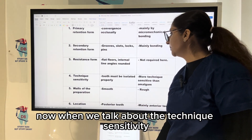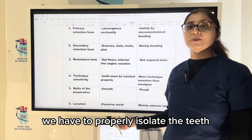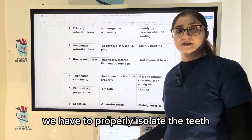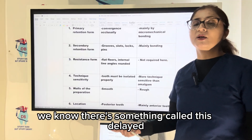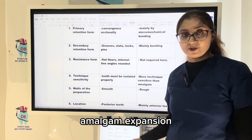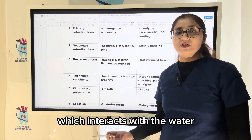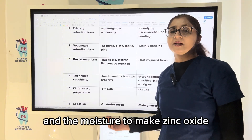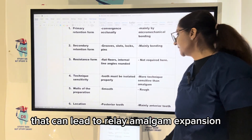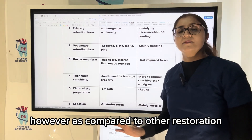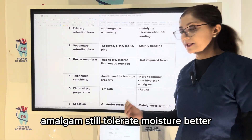When we talk about technique sensitivity, for amalgam we have to properly isolate the teeth because without proper isolation there is something called delayed amalgam expansion. This can happen because of the presence of zinc, which interacts with water and moisture to make zinc oxide and hydrogen gas, leading to delayed amalgam expansion. However, compared to other restorations, amalgam still tolerates moisture better.